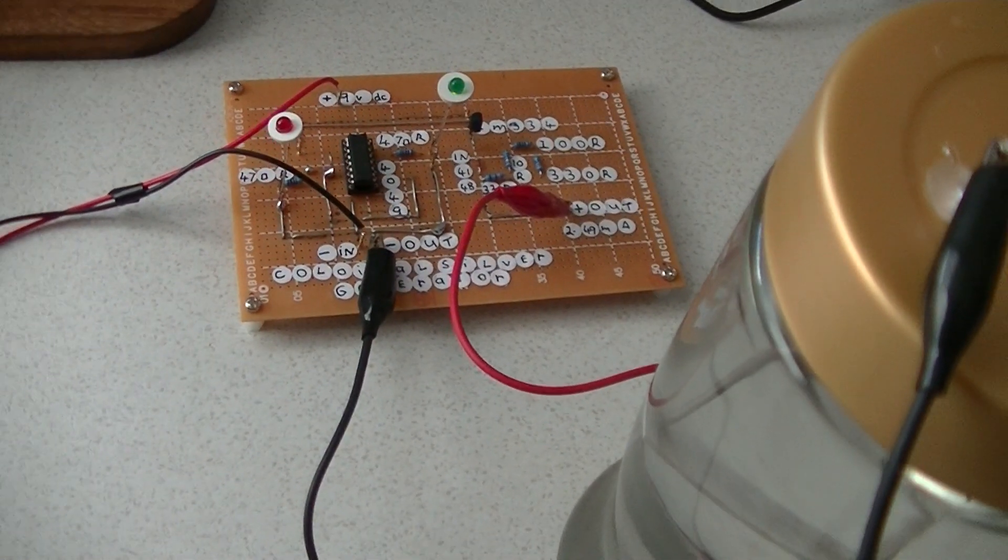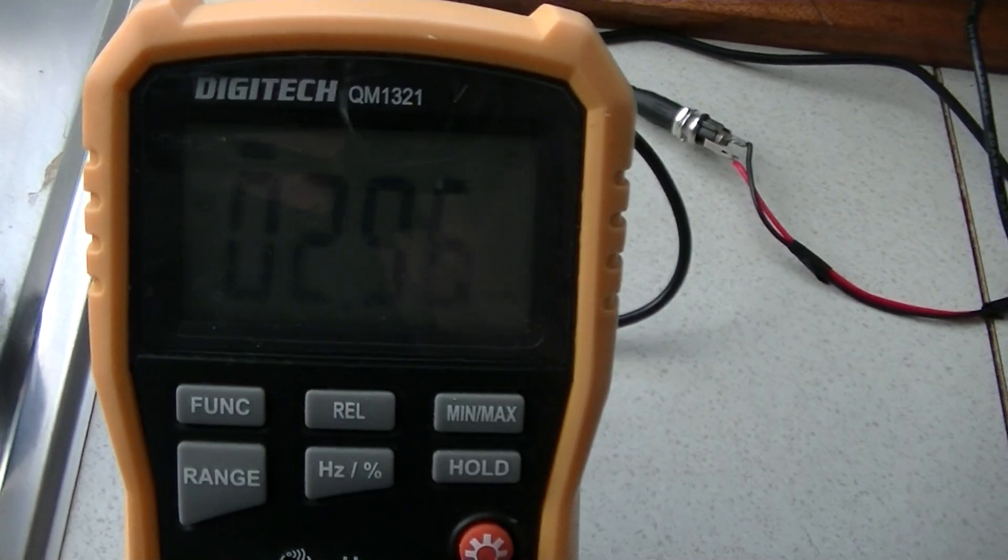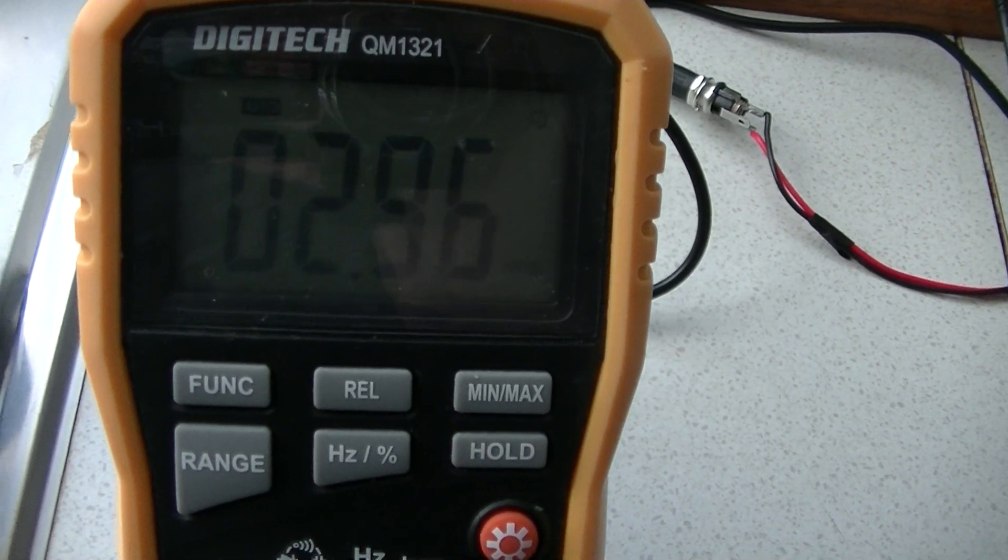I've got my multimeter rigged up in series with the output to the Colloidal Silver brew jar. I'm monitoring the Constant Current Output, which is 2.96 milliamps now.